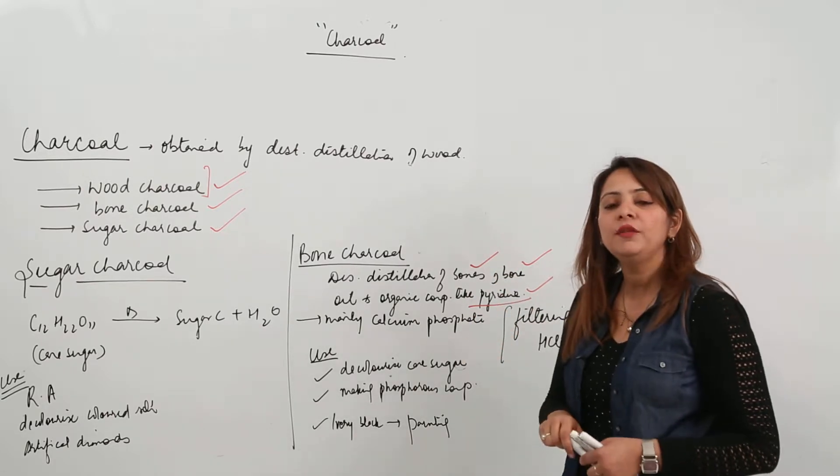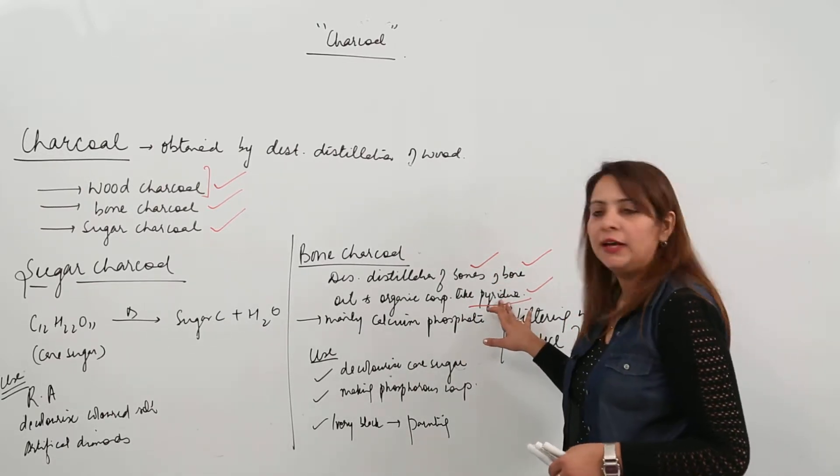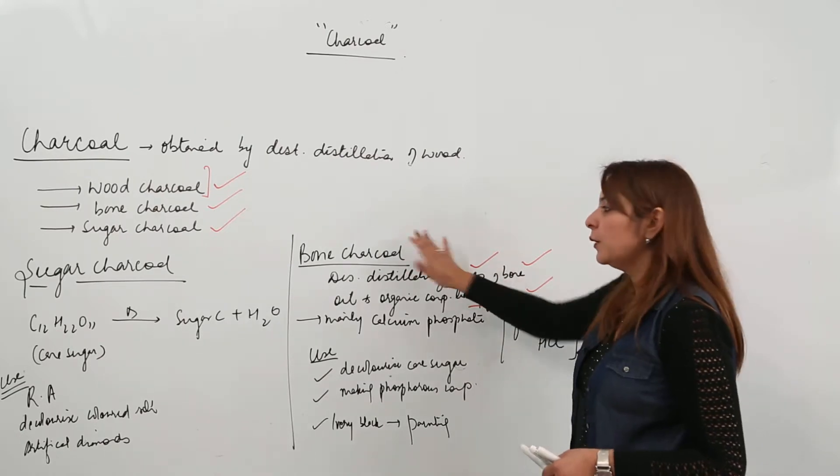But instead of coal, we need to use bones, bone oil, and organic compounds like pyridine. So we get bone charcoal.